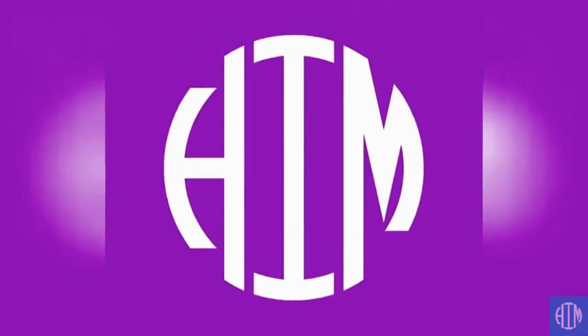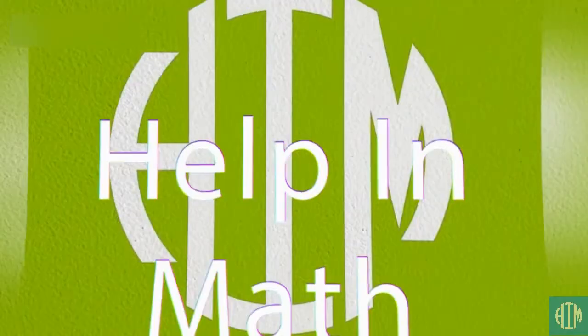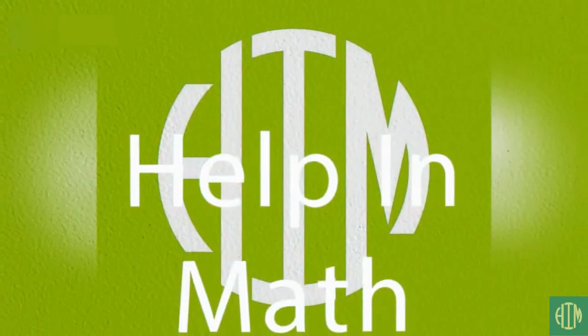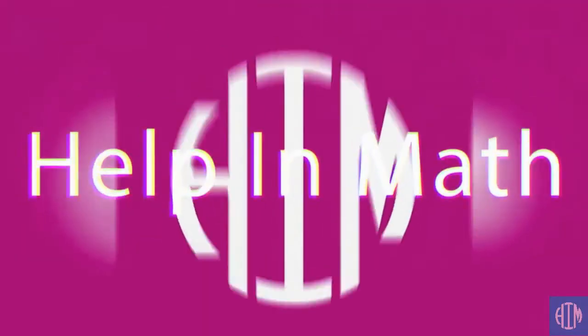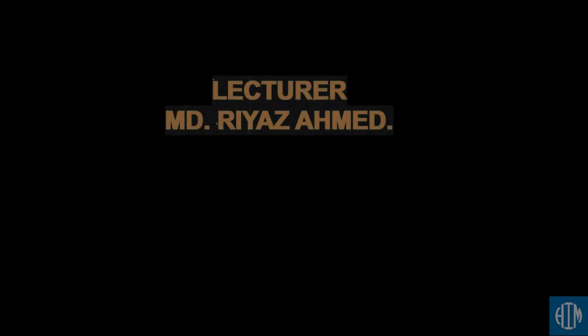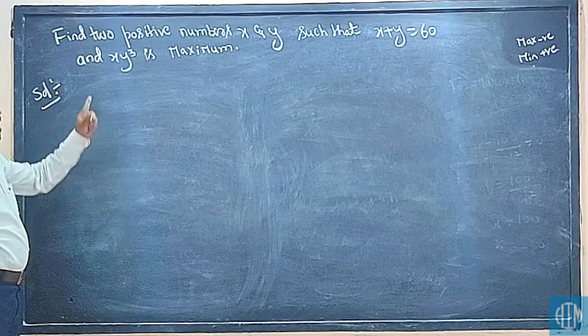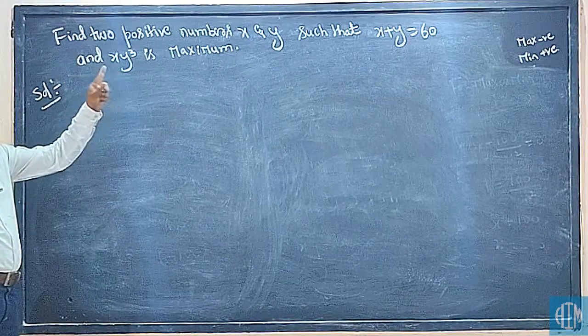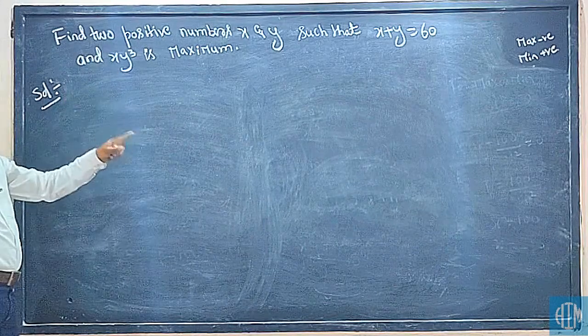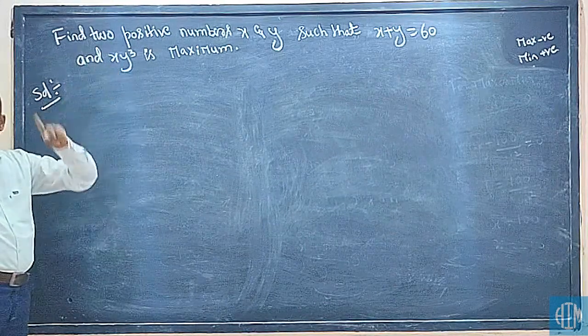Find two positive numbers x and y such that x plus y is equal to 60 and xy³ is maximum.